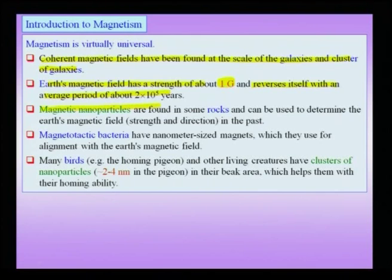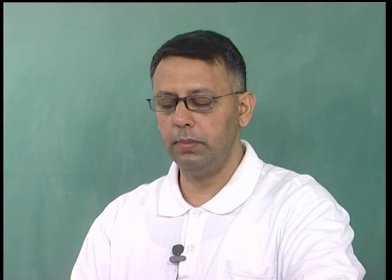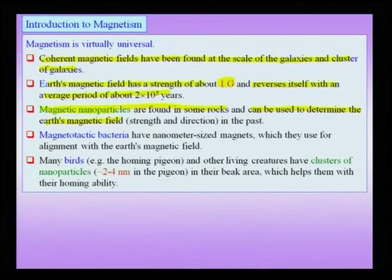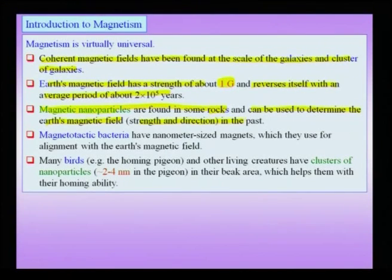Magnetic nanoparticles found in rocks can actually be used to determine Earth's magnetic field. We know that Earth's magnetic field has been reversing because of magnetic nanoparticles found in some special rocks. From these, we can determine the Earth's magnetic field strength and direction in the past. Such magnetic nanoparticles have also been used in plate tectonics to see how continents and plates move and rotate.